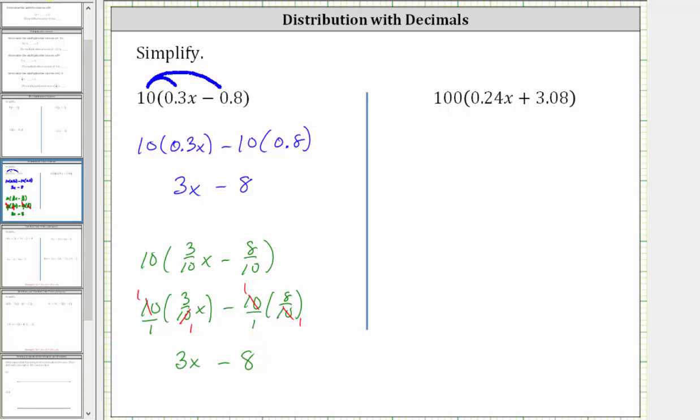For the next expression, we clear the parentheses by distributing 100. The first product is 100 times 0.24x. And then we have plus 100 times 3.08.